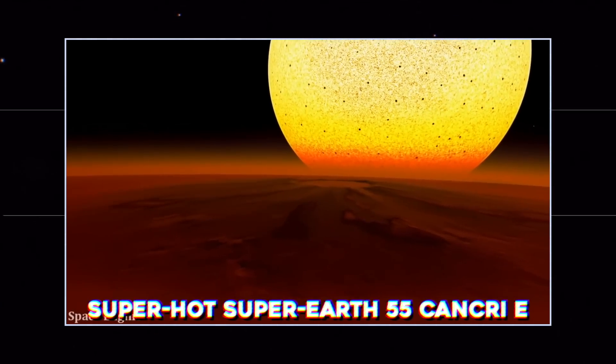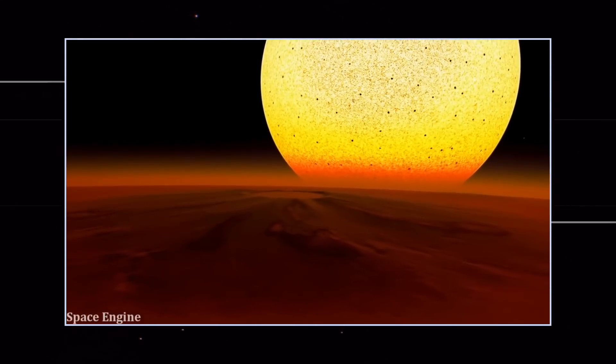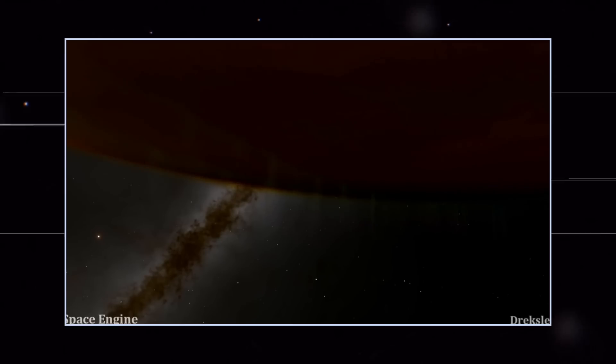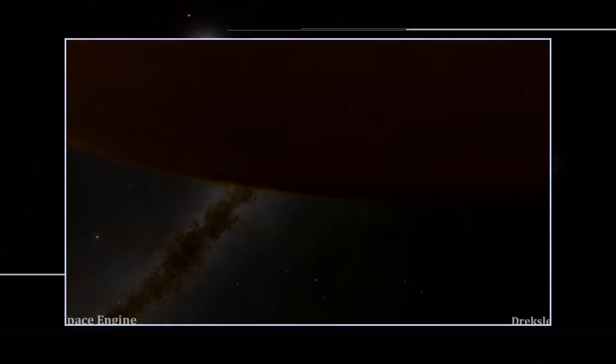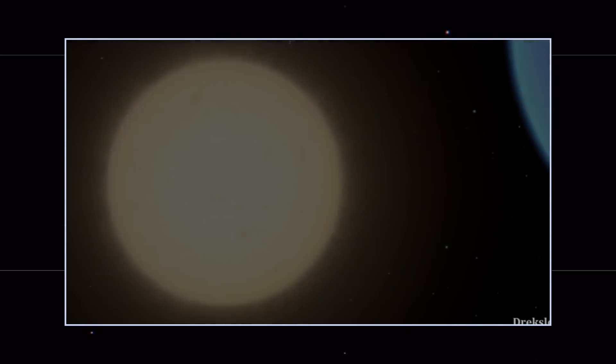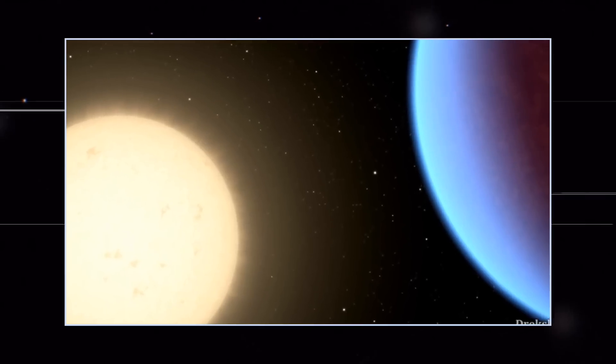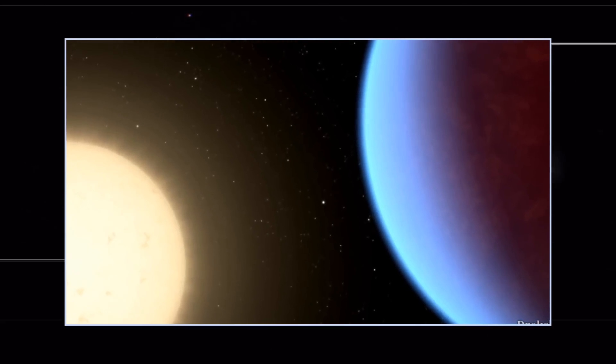55 Cancri e orbits less than 1.5 million miles from its sun-like star, completing one circuit in less than 18 hours. With surface temperatures far above the melting point of typical rock-forming minerals, the day side of the planet is thought to be covered in oceans of lava.